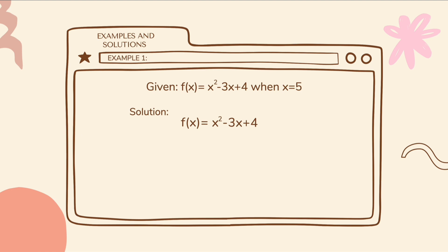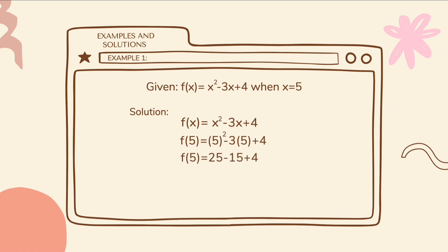The first step in evaluating functions is to substitute. So we simply substitute all the x values with the given number, which is 5. So it becomes: f of 5 is equal to 5 squared minus 3 times 5 plus 4. Now that we are done substituting, we can now simplify the equation. 5 squared is equal to 25, negative 3 times 5 is equal to negative 15, then plus 4.